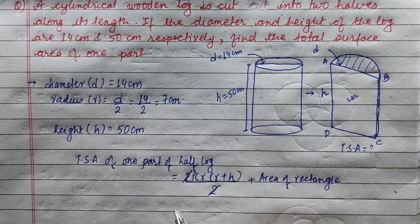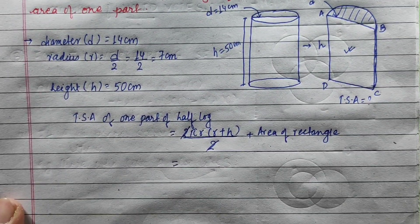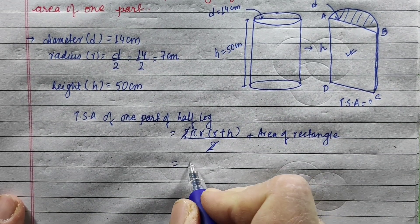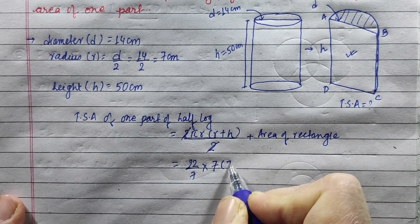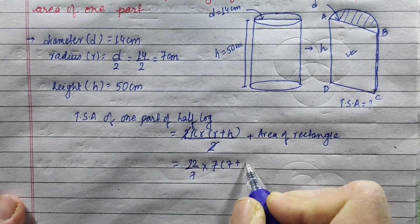This is divided by 2. Now, π = 22/7. The radius is 7 cm. 7 plus height is 50.